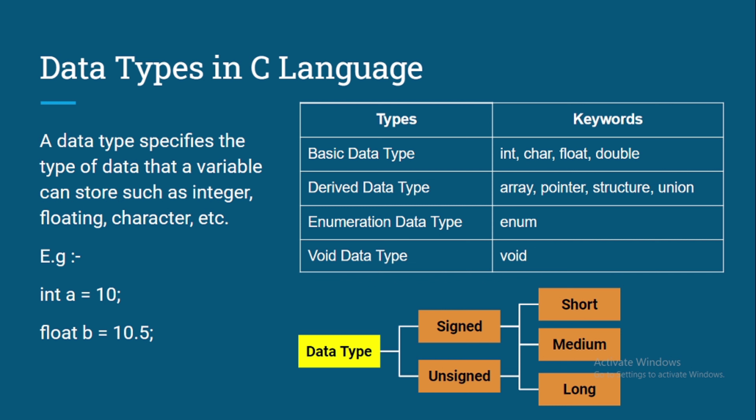On the right-hand side we have a table with two columns — types and keywords — where we have mentioned the types of data types and the keywords used for them. The basic data types are integer, character, float, and double. These are very basic data types in any programming language, and the same applies in C.